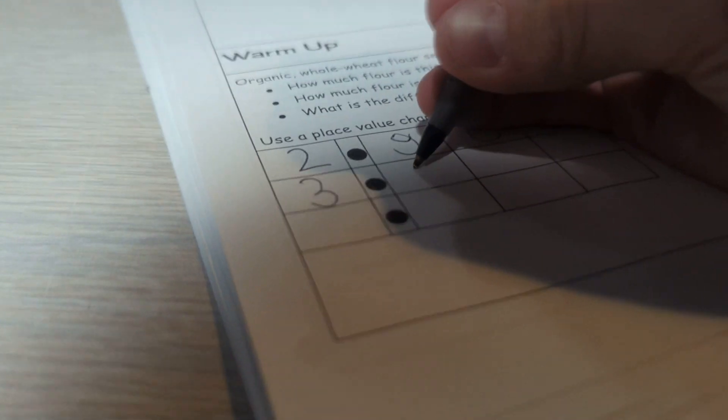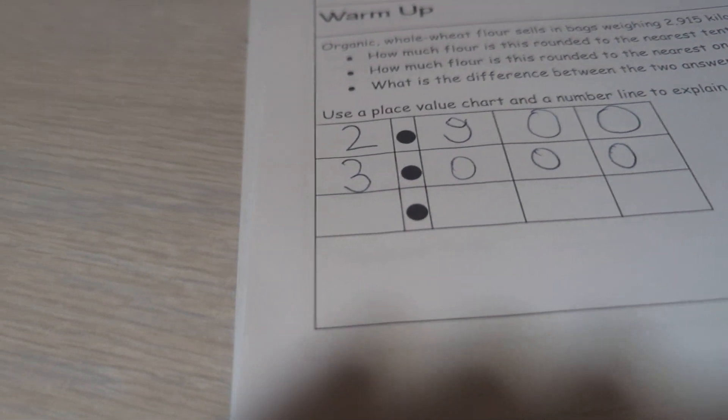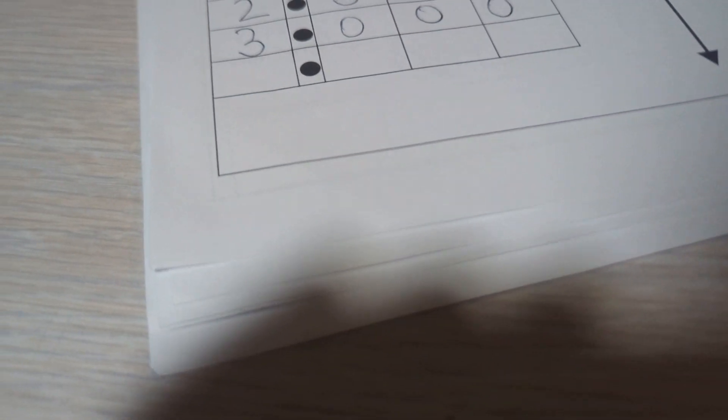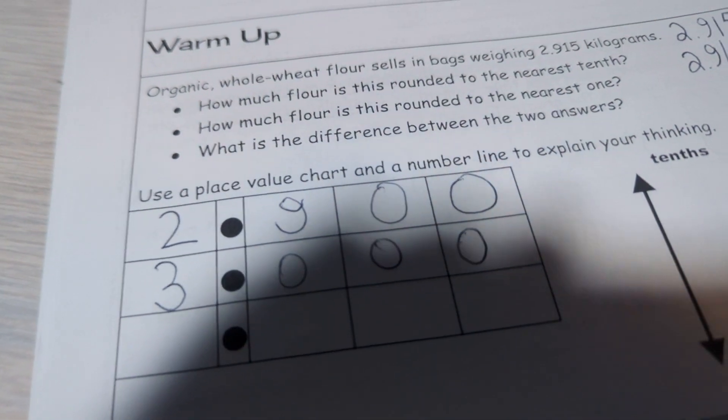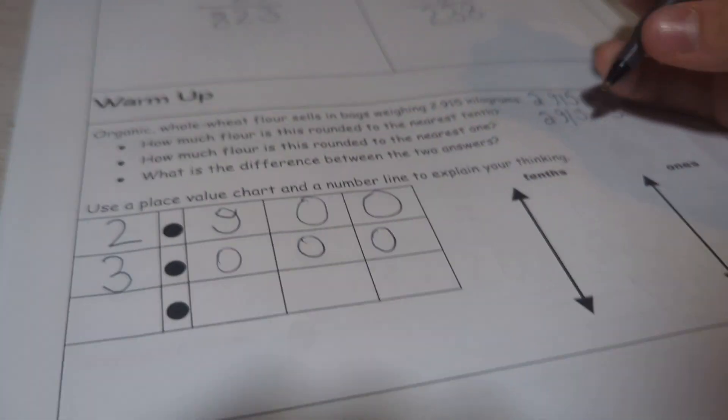So what is the difference between the two answers? So we actually got 2 and 9 tenths minus 3, but we're not done. So we still need to work up.